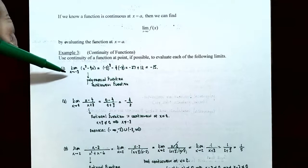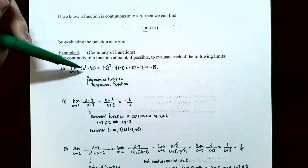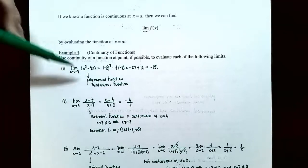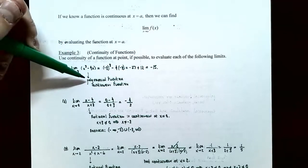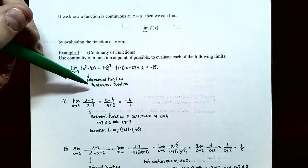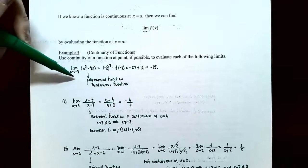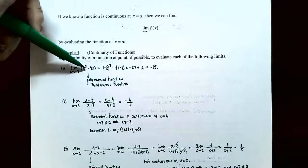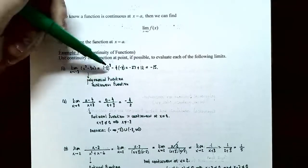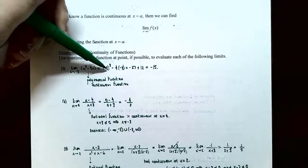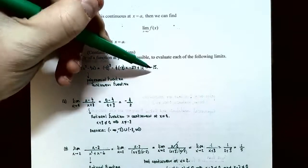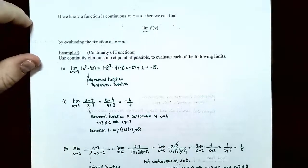We know this is a polynomial function, and polynomial functions are continuous for all real numbers — so it's definitely continuous at x equals negative three. We can plug in x equals negative three: negative three cubed minus four times negative three equals negative fifteen. So the y values are approaching negative fifteen.